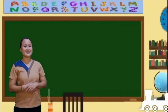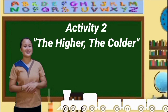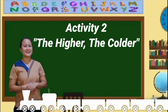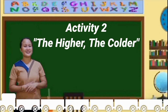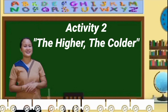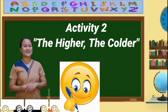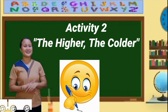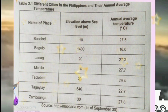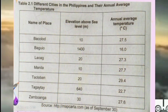Now let's have the second activity entitled 'The Higher the Colder.' This activity requires your analyzation, so I'll give you one minute to analyze the given picture. When the time is up, I'll ask you based on the data in the picture. The picture shows different cities in the Philippines, their elevation or altitude above the sea level, and their annual average temperature.